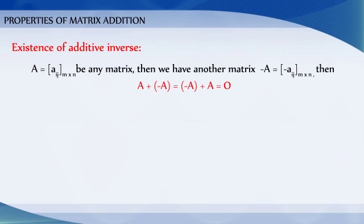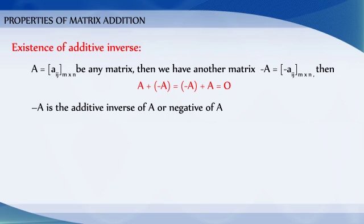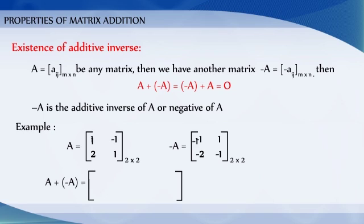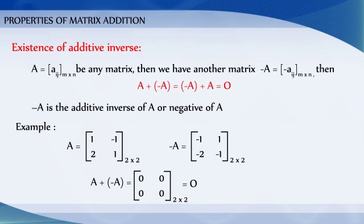Existence of additive inverse: Let A equal to Aij of order M by N. Then we have another matrix minus A, which is equal to minus Aij of order M by N, such that A plus minus A is equal to minus A plus A, which is equal to the zero matrix. So minus A is the additive inverse of A, or the negative of A.